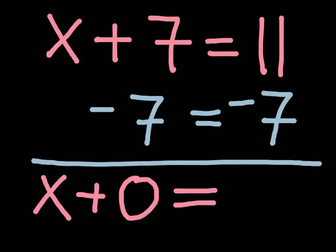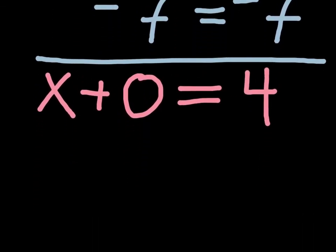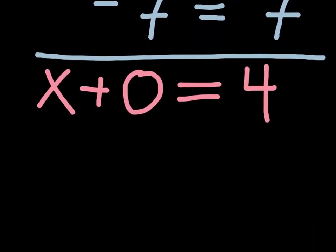On the right side of the equation, I have positive 11 minus 7. I can rewrite that as 4. I can further simplify my equation by simply writing x equals 4.